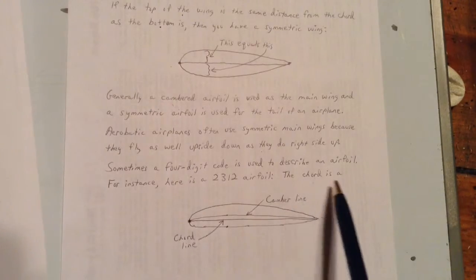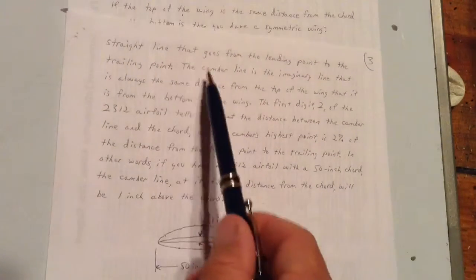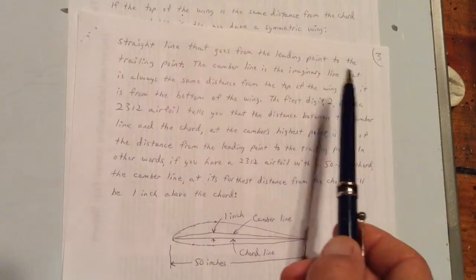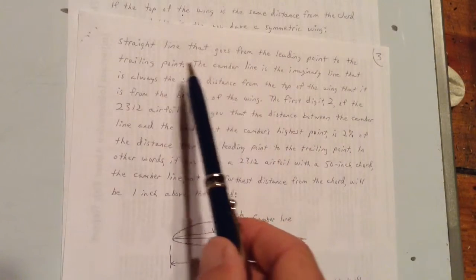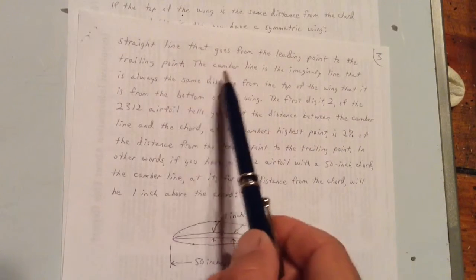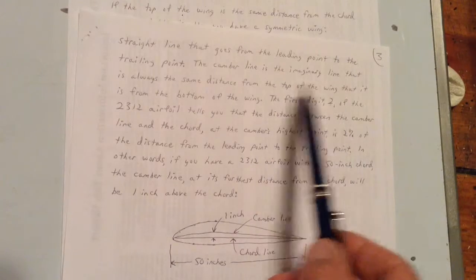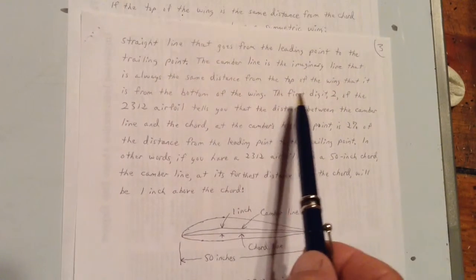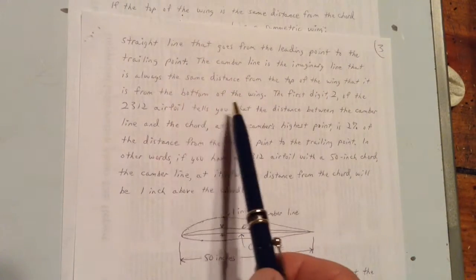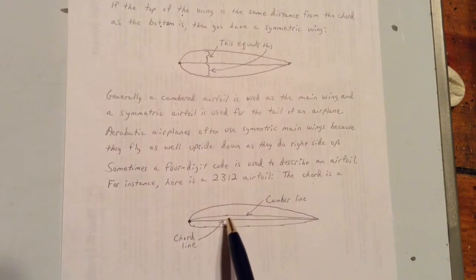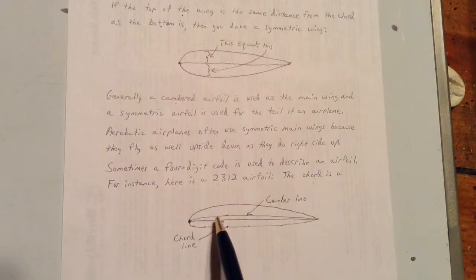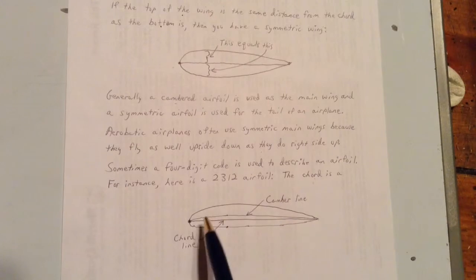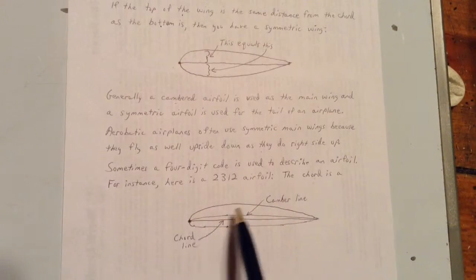The cord is a straight line that goes from the leading point to the trailing point. Yeah, we discussed that a second ago. The camber line is the imaginary line that is always the same distance from the top of the wing that it is from the bottom of the wing. See here? There's the cord line, that straight one right there. There's the camber line. It curves up a little bit.